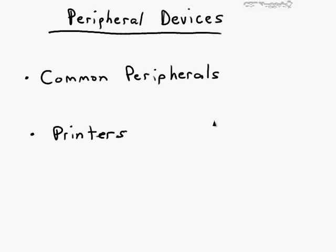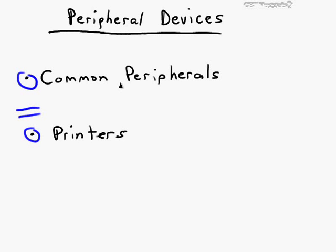Peripheral devices. A peripheral in PC hardware terminology refers to electronic equipment that's connected by cable to the main case of the computer. The device is attached to the host computer but not permanently a part of it, so it's more or less dependent upon the host. In this nugget we'll look at common peripheral devices and then turn to the various types of printers used in information technology in the 21st century.